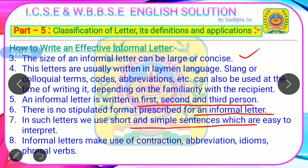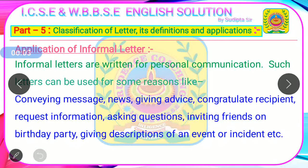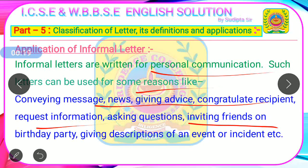Number 8: Informal letters make use of contractions, abbreviations, idioms and phrasal verbs. For example, 'do not' is written in its contraction form as 'don't', and 'cannot' as 'can't'. These forms can be used while writing an informal letter. Application: Informal letters are written for personal communication and can be used for conveying messages, news, giving advice, congratulating the recipient, requesting information, inviting friends to a birthday party, or giving descriptions of an event or incident.